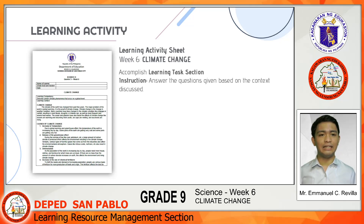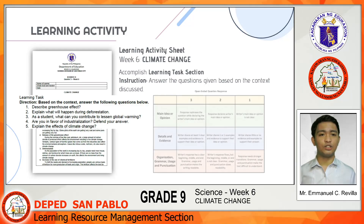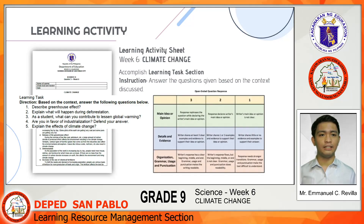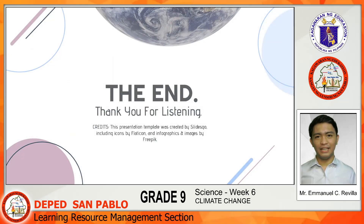In the Learning Tasks section, you will find five questions to answer based on the context we have just discussed. The scoring rubric is also included in the material to guide you on how your output will be graded. For online learners, this will be uploaded into Google Classroom. For modular learners, you'll be given a copy. This ends our video for today. Thank you for watching, and happy learning, everyone.